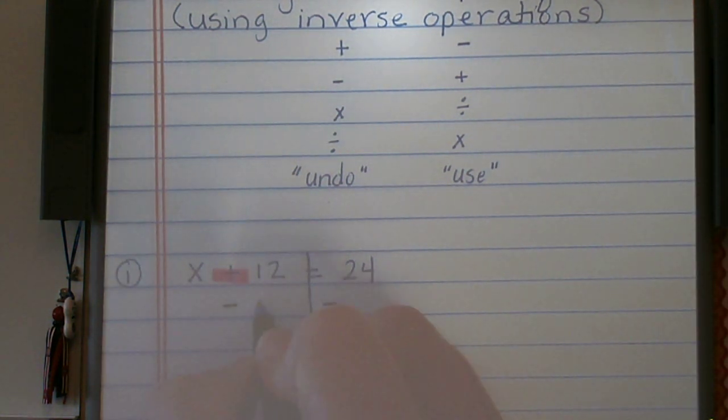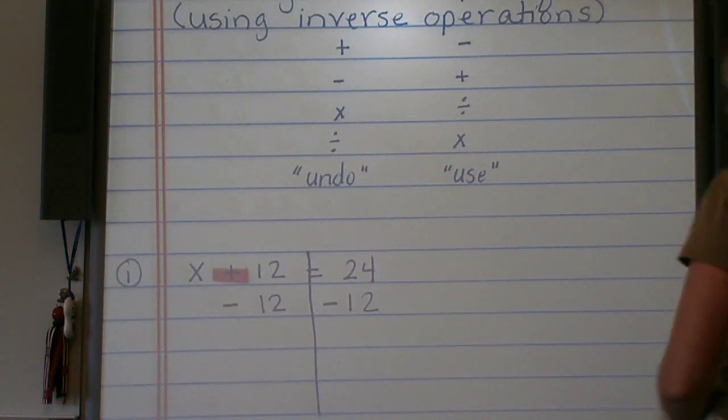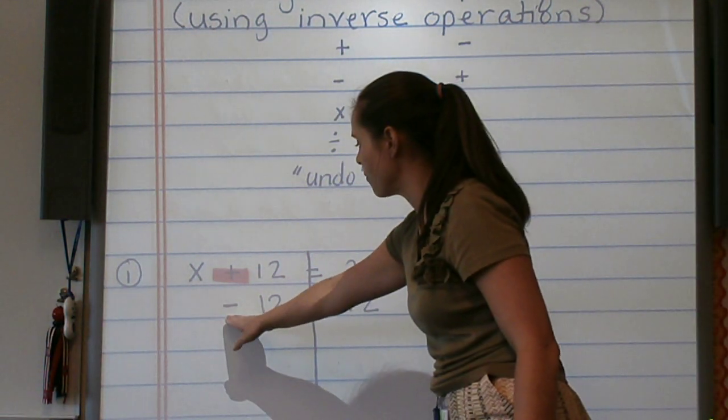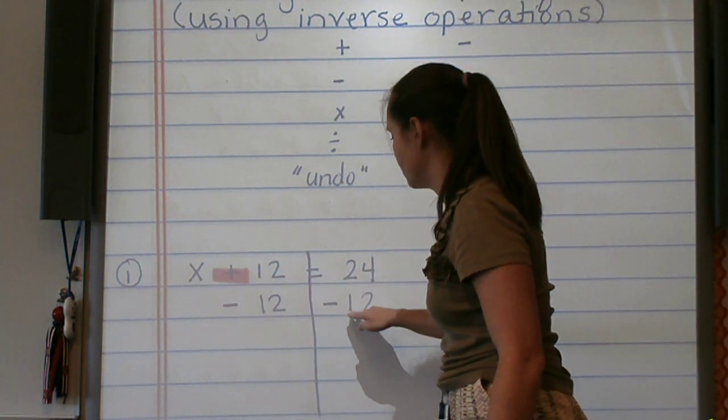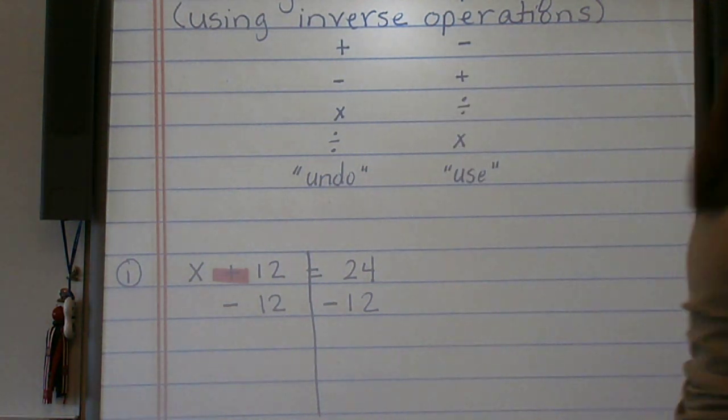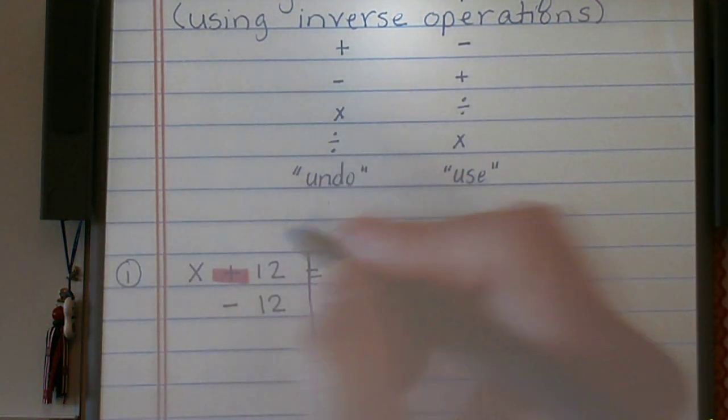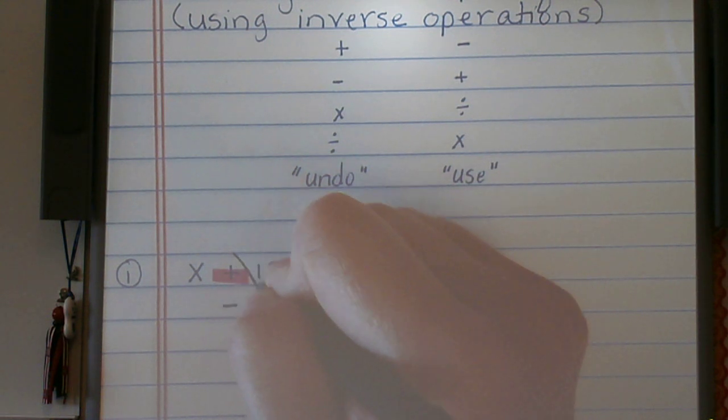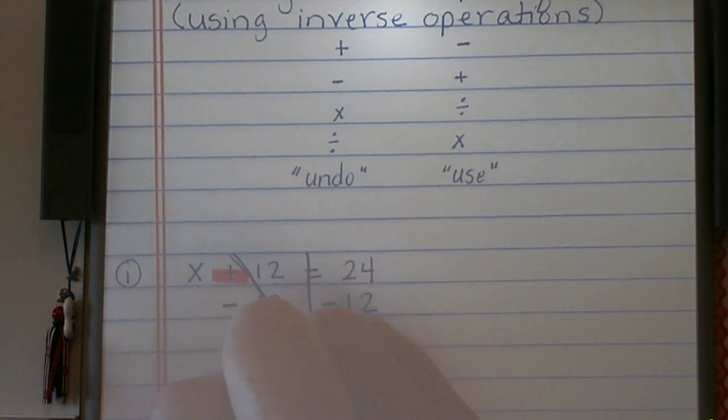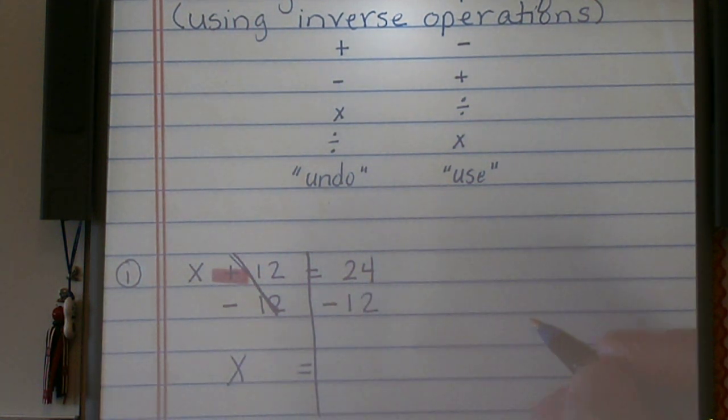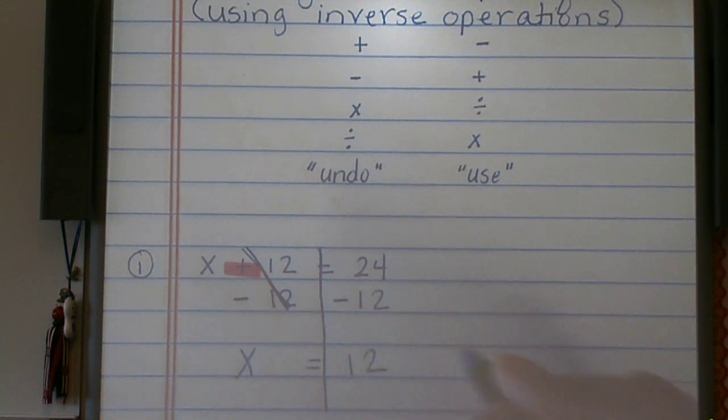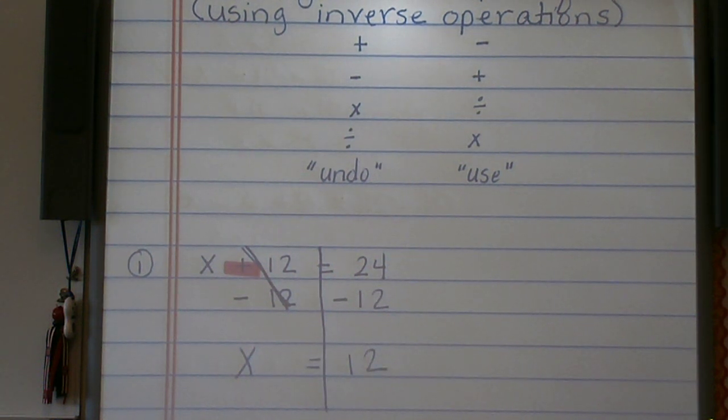Since we're adding 12, we're going to subtract 12. And the rule of thumb goes, what you do to one side, you must do to the other. So we subtract the 12 from this side, we must subtract 12 from the other side. This is going to cancel this out so that we're only left with x equals, and then 24 minus 12 is 12. And we have solved this one-step equation.